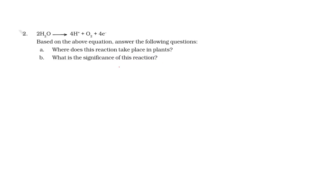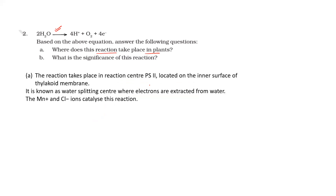The second question gives an equation and asks where this reaction takes place in plants. The answer is that this reaction occurs in the grana — it is occurring in the chloroplast, specifically in the grana. It is associated with PS2, which is located on the inner surface of the thylakoid membrane, and it is a part of the light reaction.